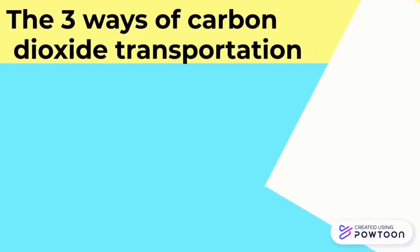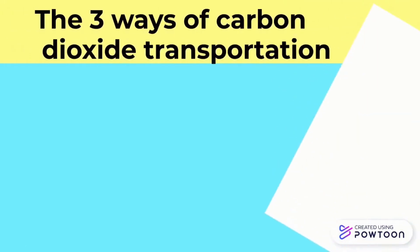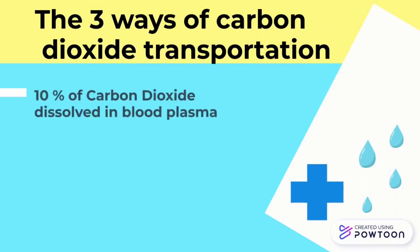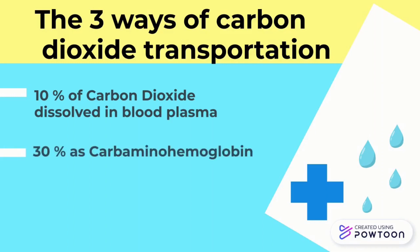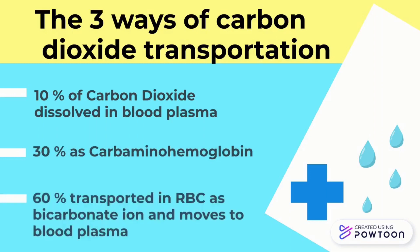There are 3 ways of carrying carbon dioxide from tissues to the respiratory surfaces. The first one is 10% of carbon dioxide dissolved in blood plasma. Secondly, 30% as carbaminohemoglobin. And the third one is 60% transported in RBC as bicarbonate ion and moved to blood plasma.